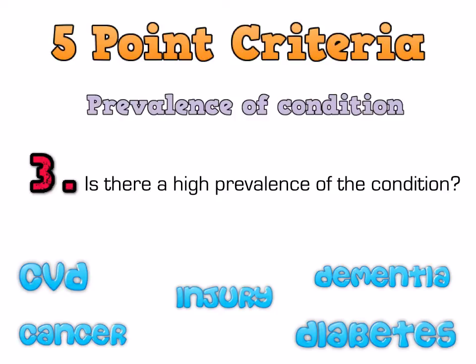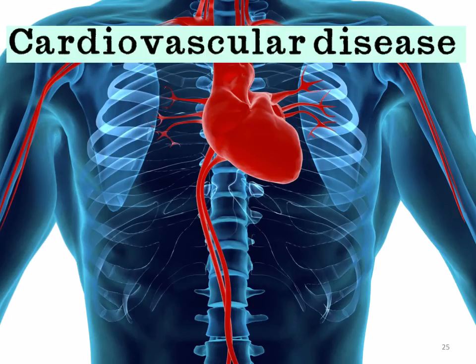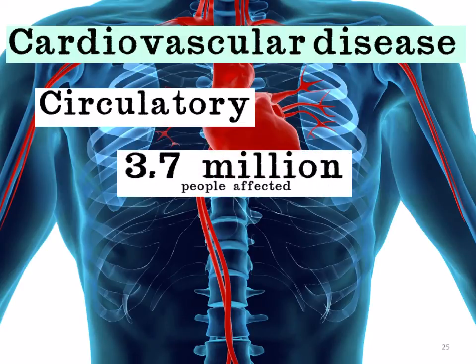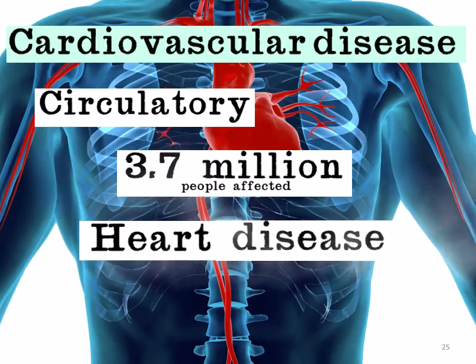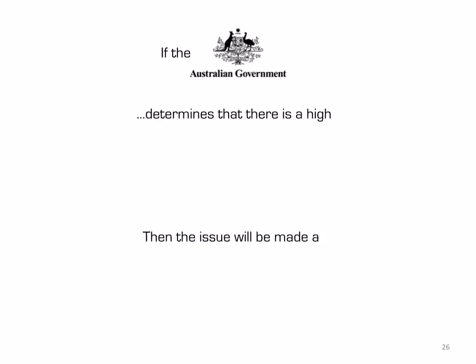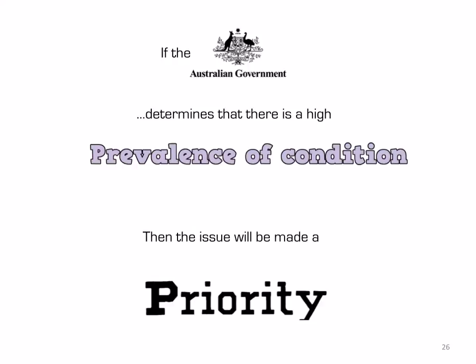If a lot of people have the disease, the government will likely make it a priority. Looking at cardiovascular disease more closely, circulatory disease affects 3.7 million people in Australia, and heart disease affects 1.1 million people. This is a disease with very high prevalence, so it makes good sense to allocate resources, funding, and education to lower it so that the community is better off. If the Australian government determines that there is high prevalence of a condition, then the issue will be made a priority.